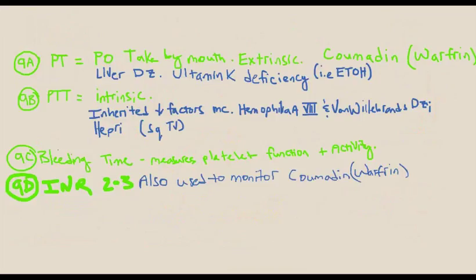To review lab results: PT is for anything taken PO like coumadin and warfarin, affected by liver disease, vitamin K deficiency, or alcohol use. PTT is associated with the intrinsic pathway, affected by inherited factors like von Willebrand disease, hemophilia A affecting factor VIII, and heparin given sub-Q or IV. Bleeding time is affected by aspirin and measures platelet function. INR should be in the range of 2-3 and is used to monitor warfarin or coumadin.